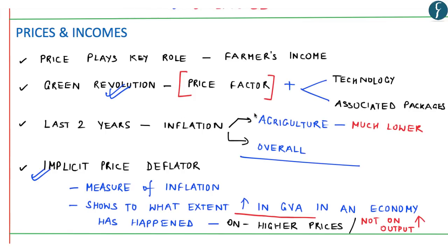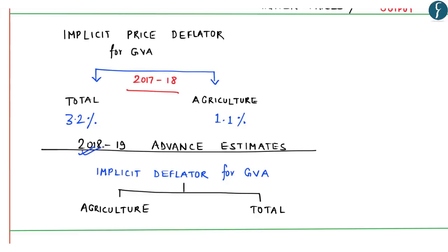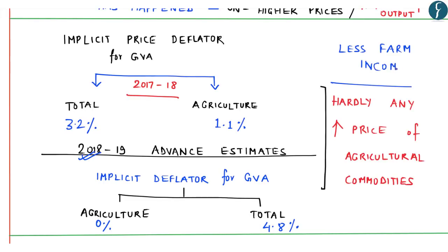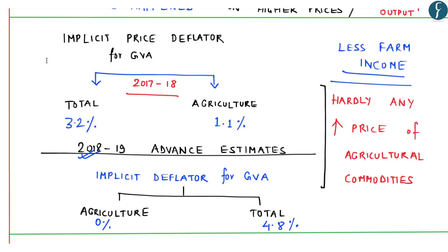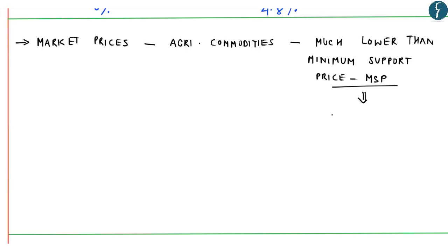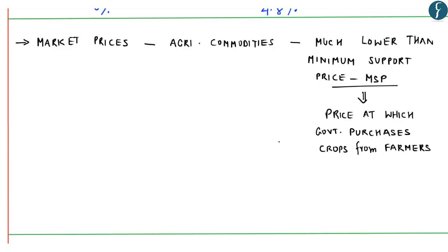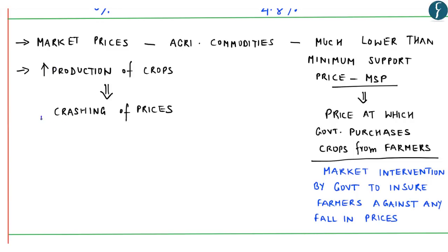This shows that in the last two years, inflation in agriculture has been much lower compared to overall inflation. Further, advance estimates for 2018-19 show the implicit deflator for GVA for agriculture is 0% whereas for total it is 4.8%. So there is hardly any increase in prices of agricultural commodities, which has effectively resulted in less farm income. Market prices for several agricultural commodities have been much lower than MSP — minimum support price. An increase in production of crops has also resulted in crashing of prices as production increases beyond market demand.